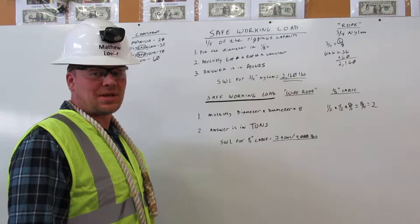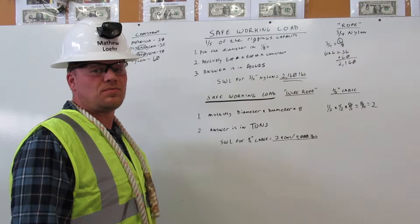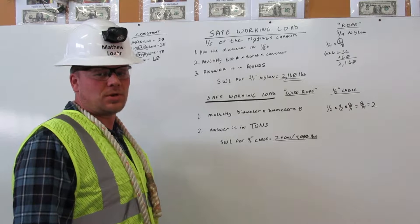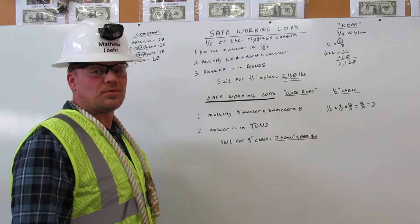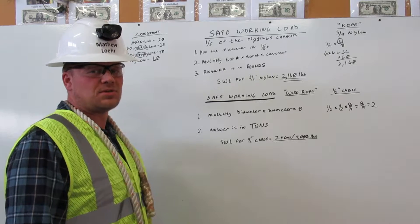I'm going to explain how to calculate the safe working load for rope and wire rope rigging. This safe working load is a number that represents one-fifth of the rigging's capacity. Let me explain.